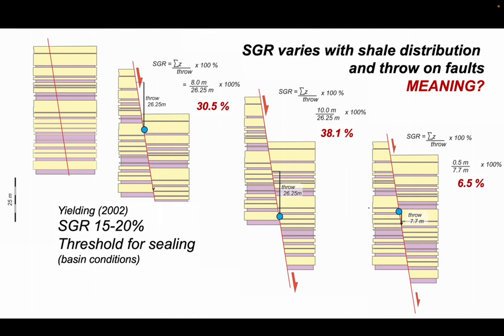In our particular scenario here, two of our scenarios are sealing where the throw was very large. But for the low throw example, for that particular part of the fault zone, the fault would have been able to transmit fluids from one side to the other.